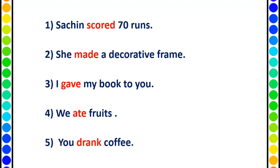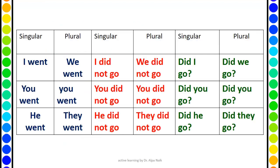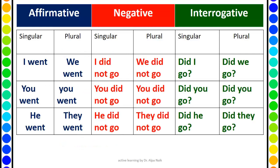Certain verbs form the past tense by simply adding 'ed', whereas in certain verbs the entire word is changed. Now let's look at affirmative, negative, and interrogative types of simple past tense.